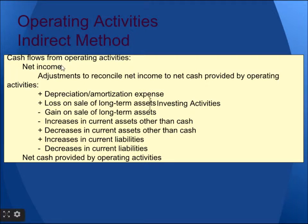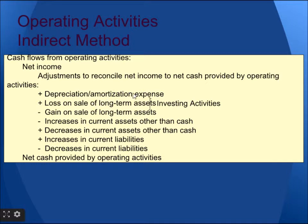Let's see an example. We have net income, and then we adjust activities like depreciation expense. An expense decreases net income. Since depreciation causes an asset to decrease, we follow the rule: whenever the asset decreases, we increase the cash flow. So we should add the depreciation expense back to net income.